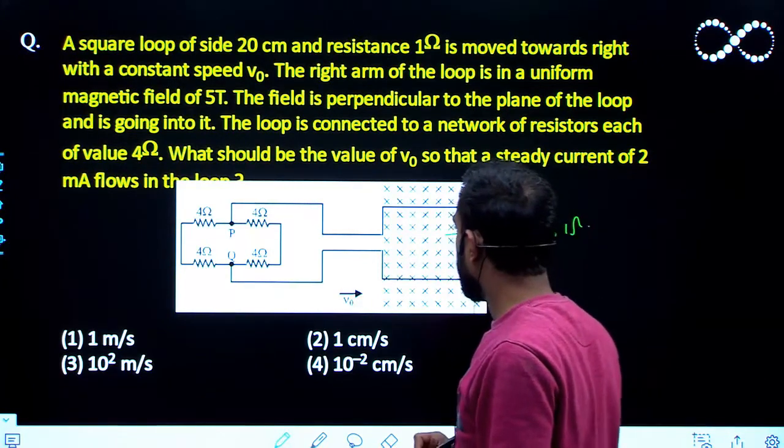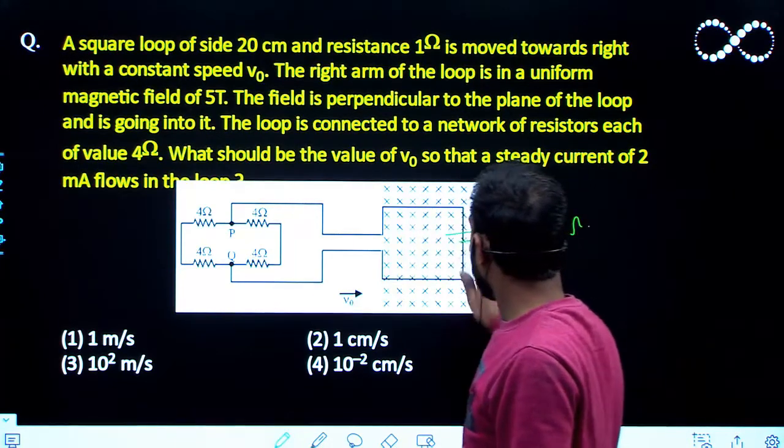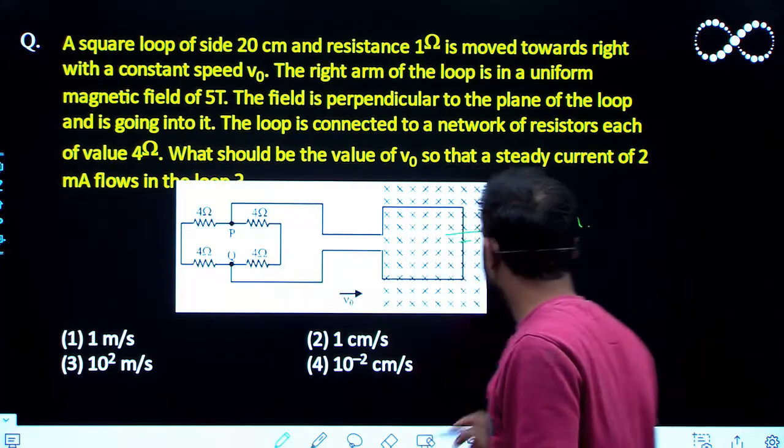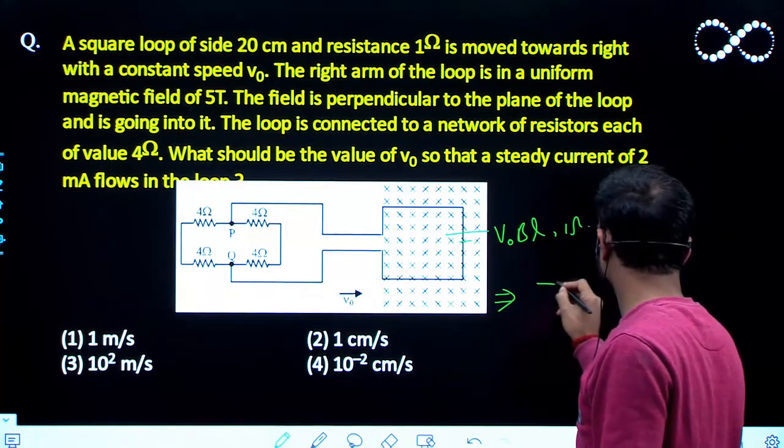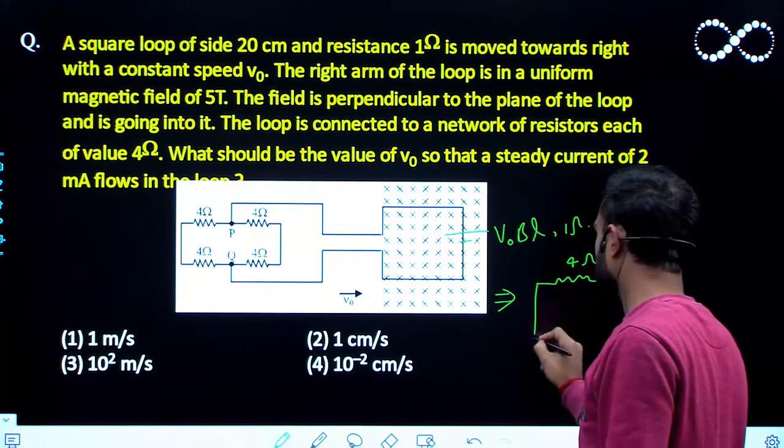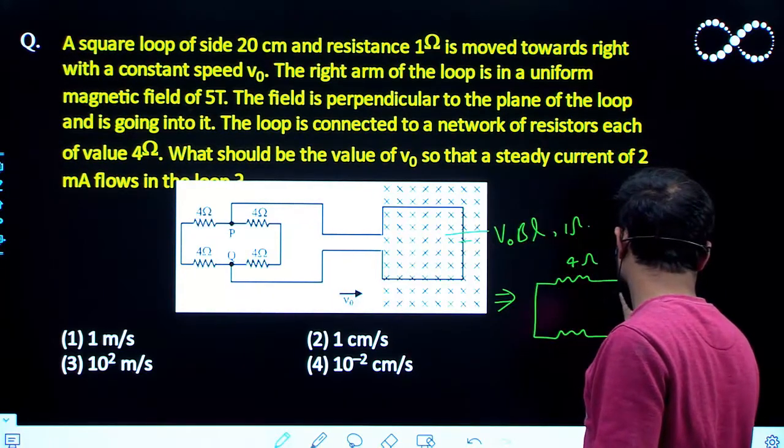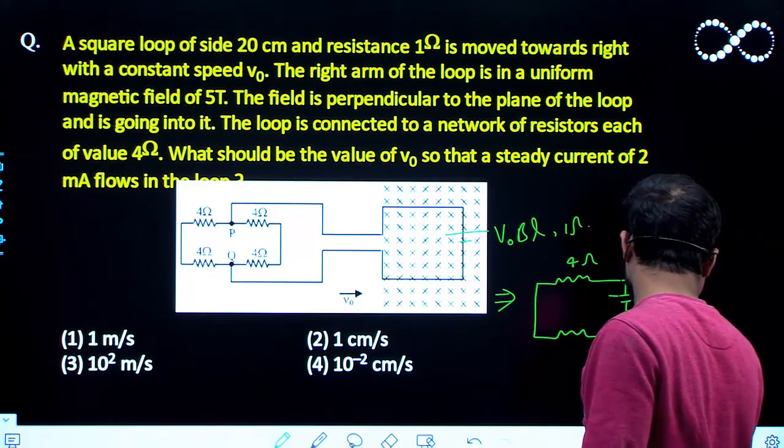If I draw this figure then this will be something like this. And this whole square loop is connected between the points P and Q. So if I redraw the electric circuit, this is the 4 ohm here, and this is another 4 ohm. And between these two points there is cell here, and this is another 4 ohm.